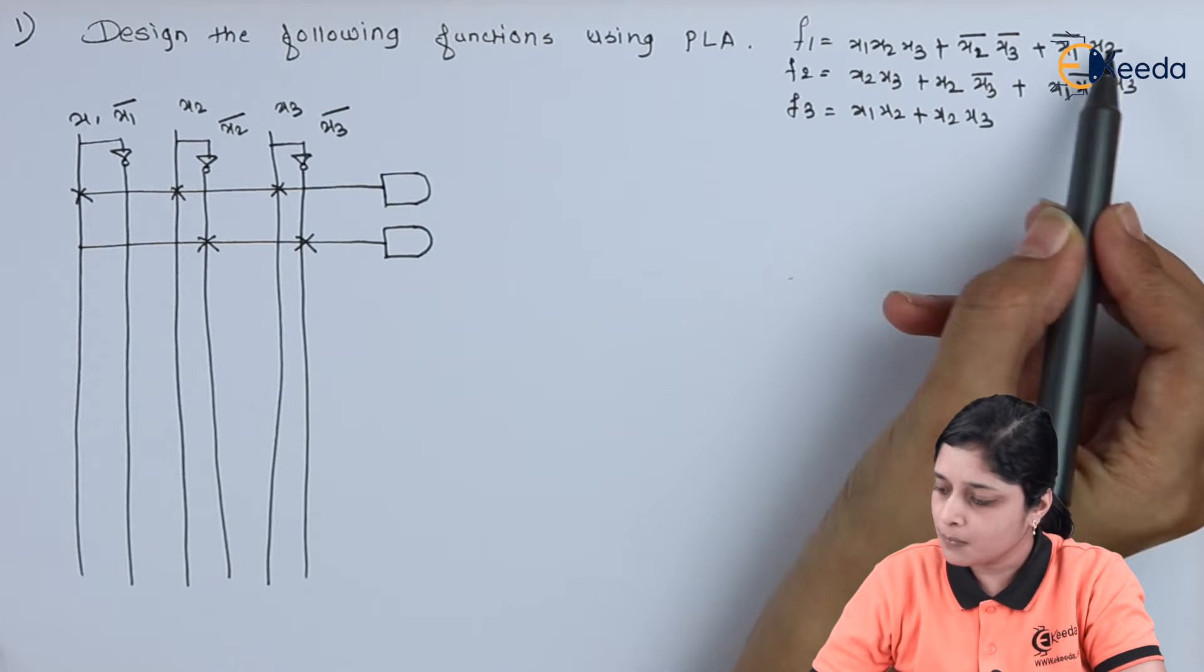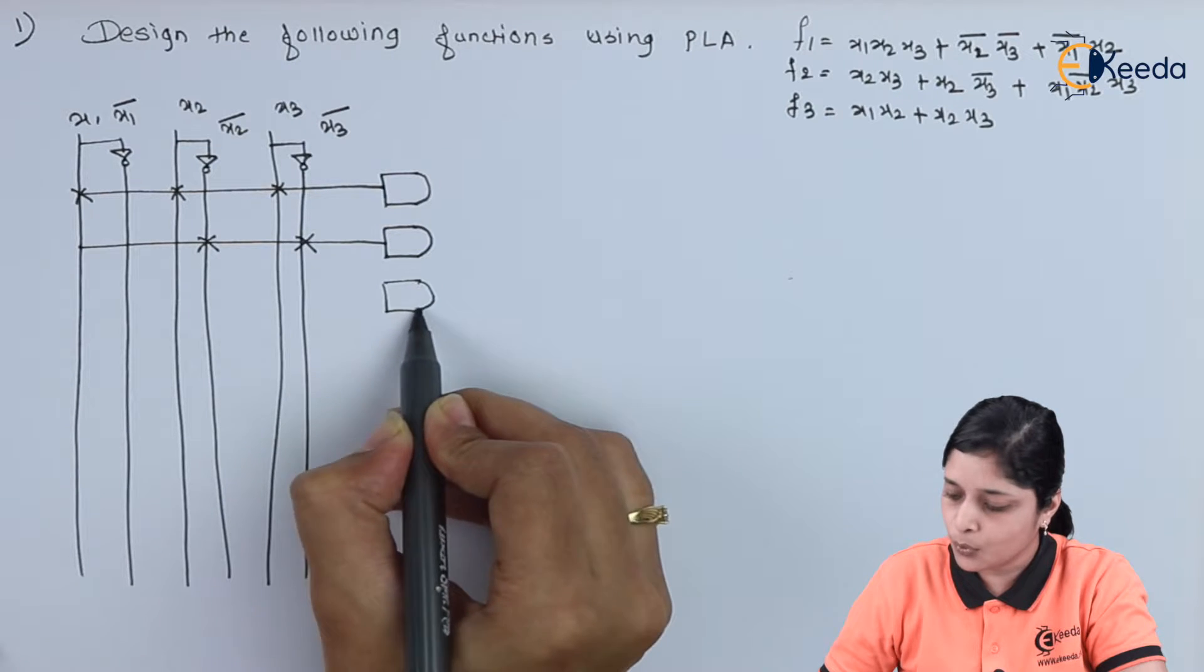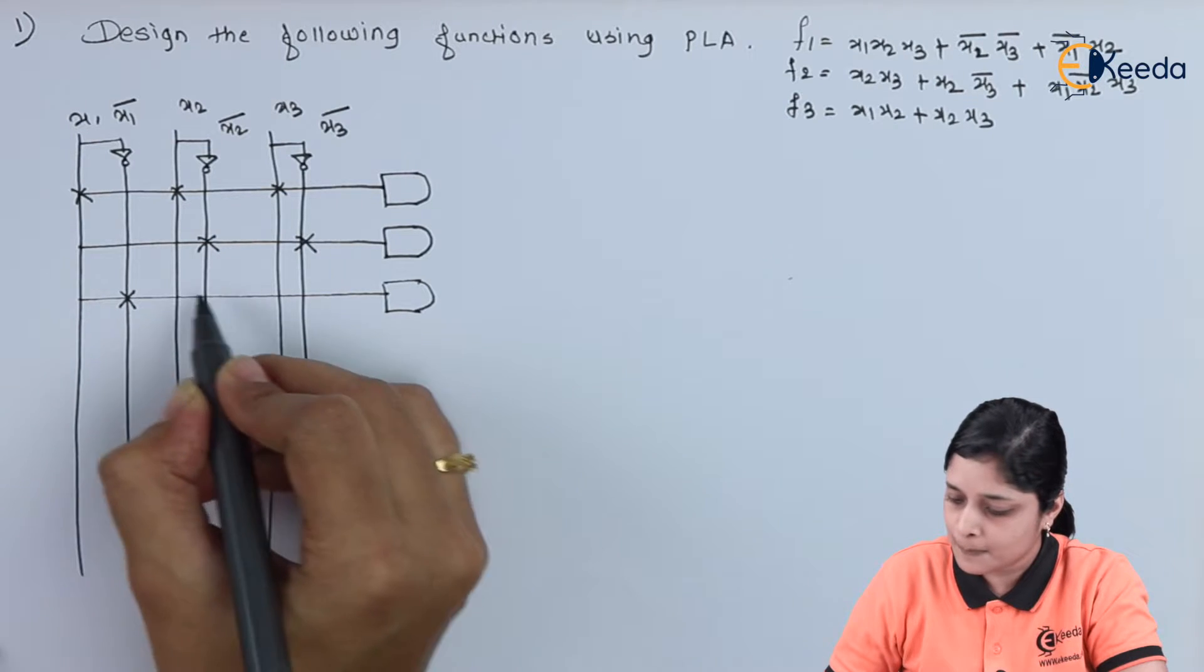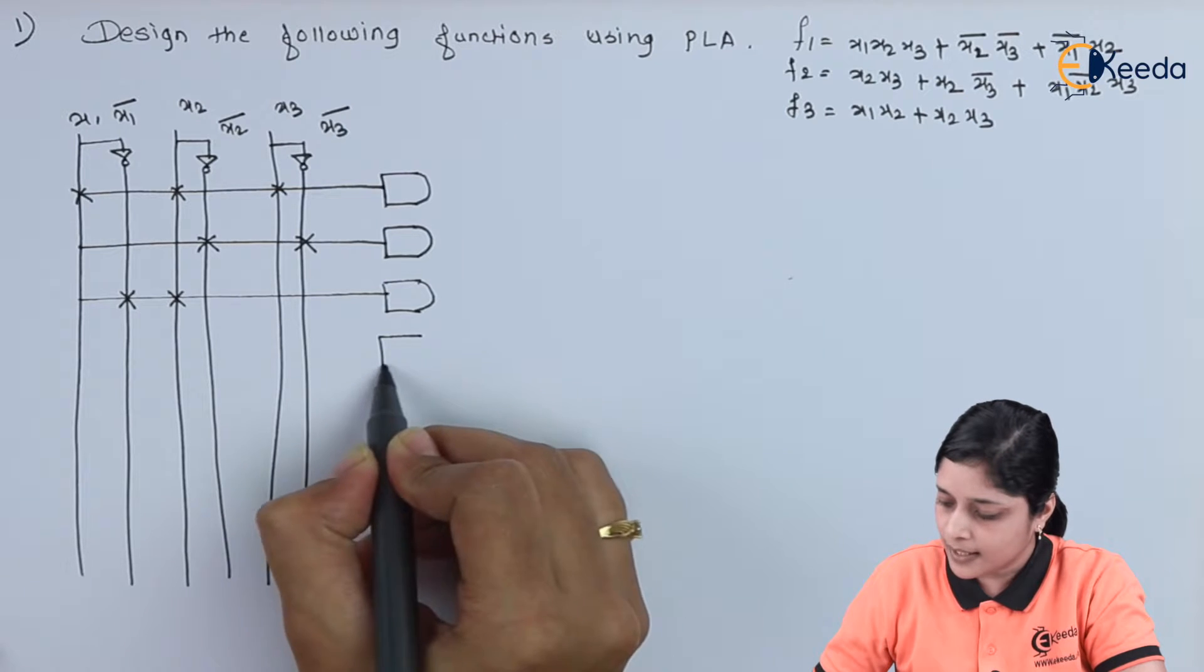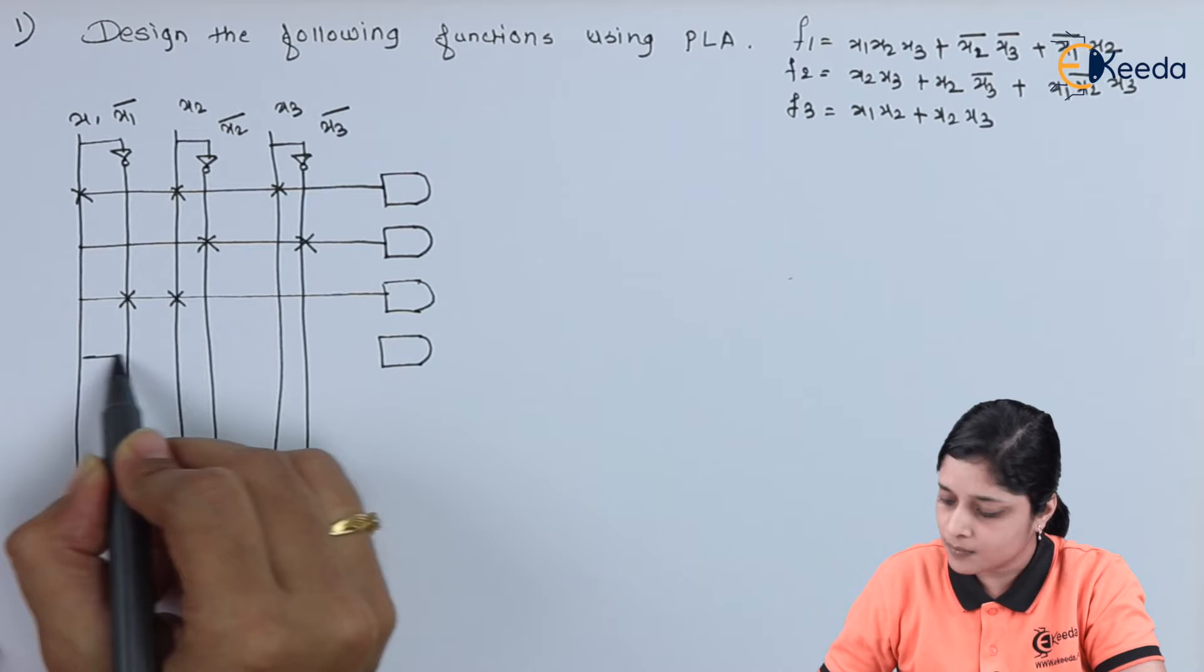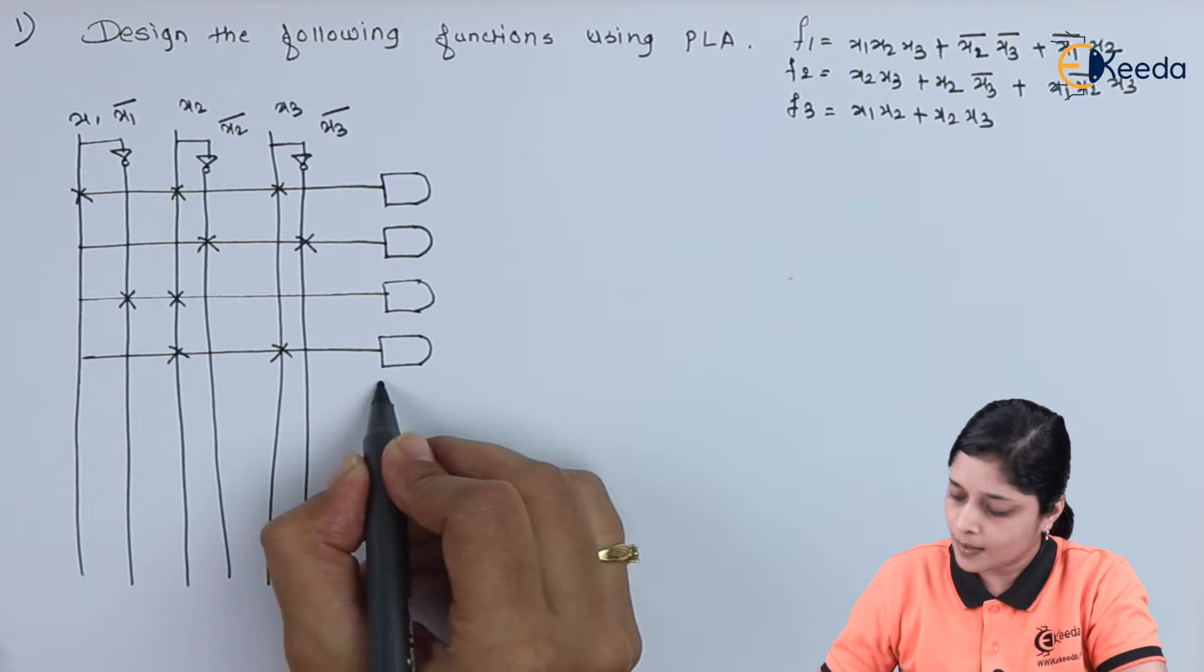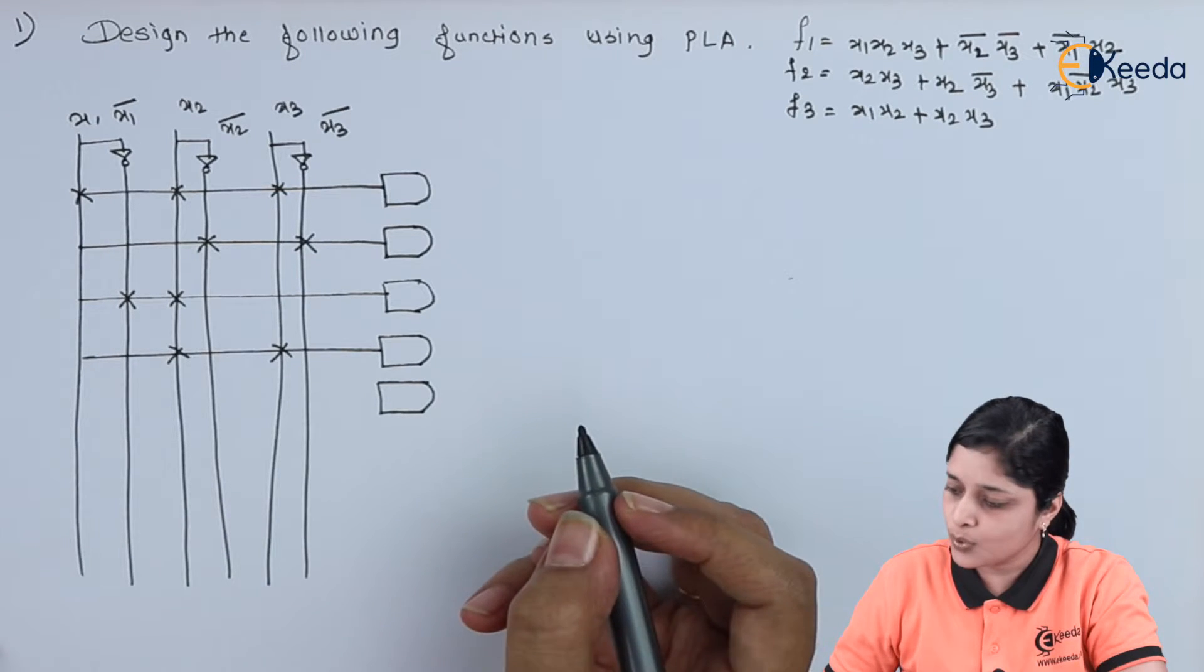After that we have X1 bar, X2. So, again we are going to draw one more AND gate. This is for X1 bar, X2. Next AND gate we will draw for X2, X3. We have here X3. We have here X2 and X3. Then after that X2, X3 bar.